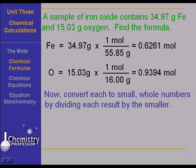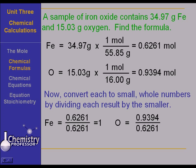Convert each to small whole numbers. How do you do that? Divide each of these number of moles by the smallest number. When you divide the 0.6261 by itself, you are setting the smaller number to 1. Then you determine the ratio of the larger number to that smaller number by taking the 0.9394, dividing it by 0.6261, and getting 1.5.